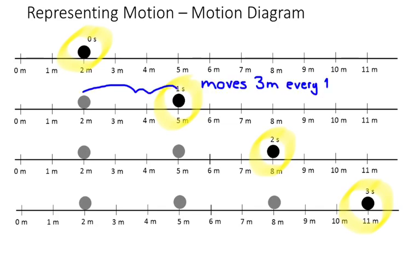The thing to notice is that during each one-second interval, the object moves 3 meters. From 2 to 5 is 3 meters. From 5 to 8 is 3 meters. And then from 8 to 11 is 3 meters. So, to kind of put a number with that, we can say that it's moved 3 meters per each second. One way to describe motion. In a picture like this is one way to represent motion.